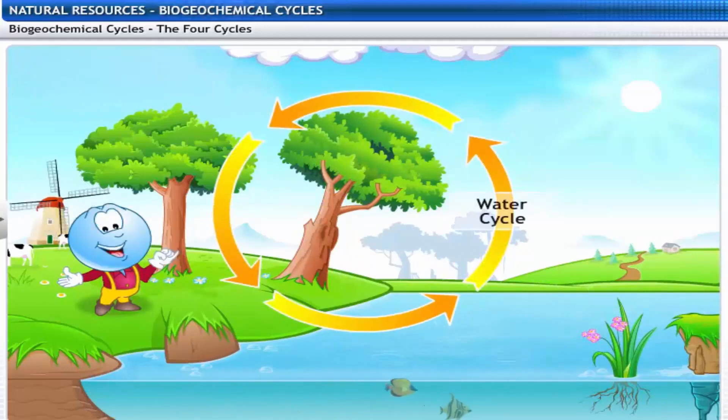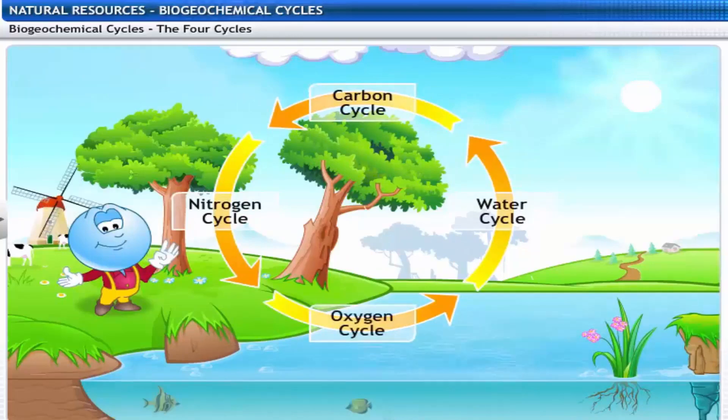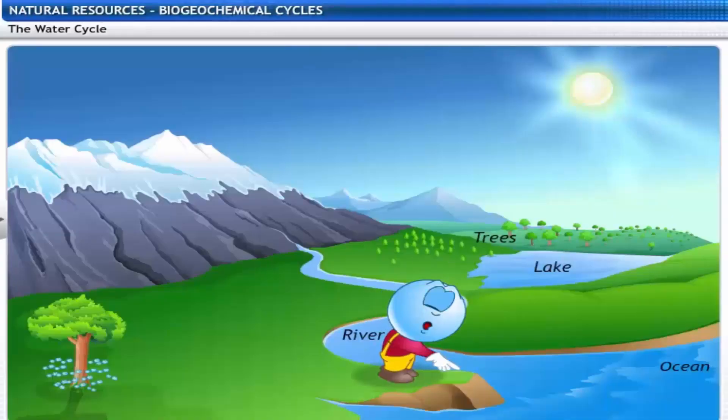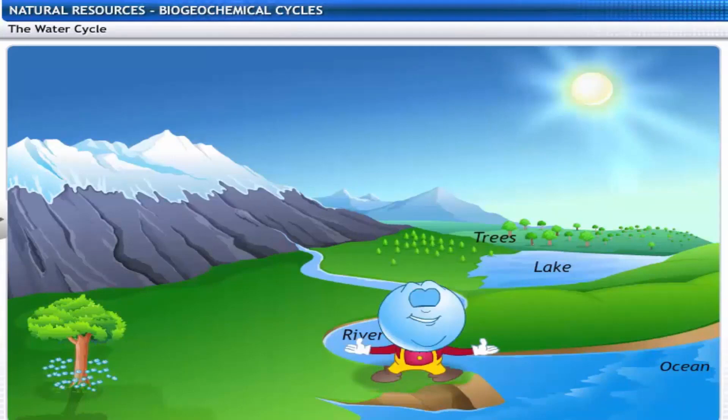They are the water, nitrogen, carbon and oxygen cycles. We know that water evaporates from water bodies, but have you ever seen seas and oceans drying up? Well, they never do. Thanks to the water cycle. Let's see how.